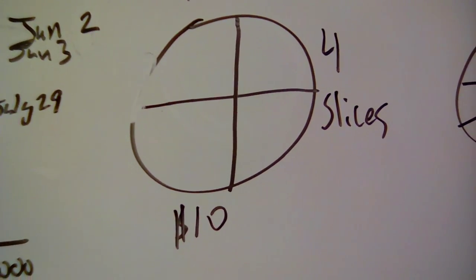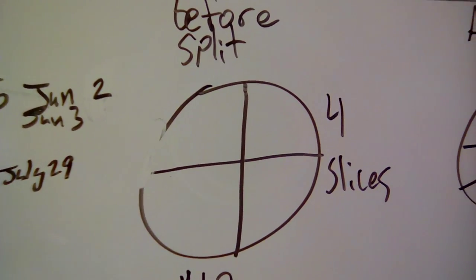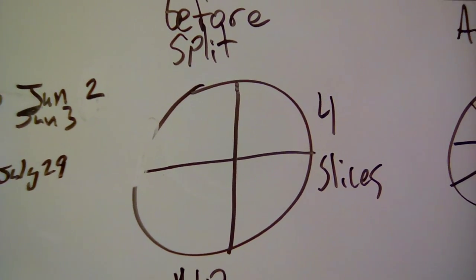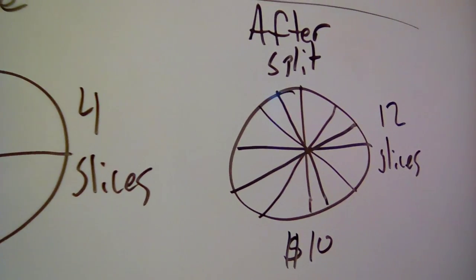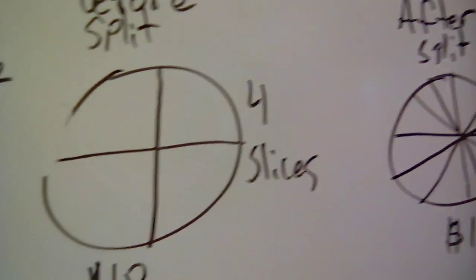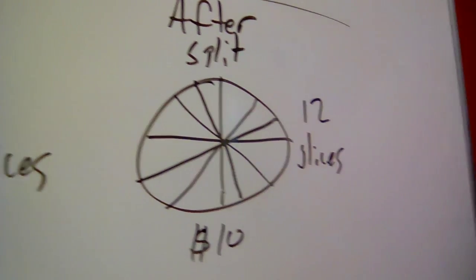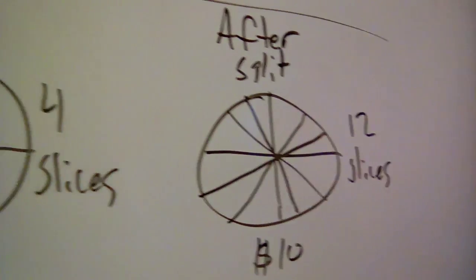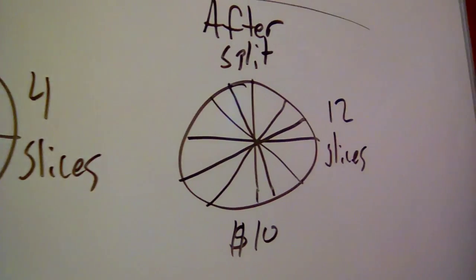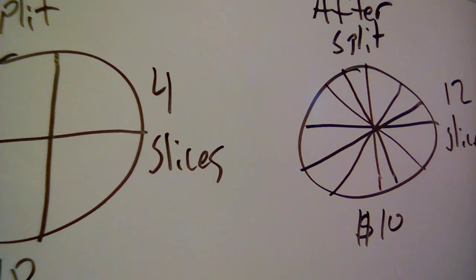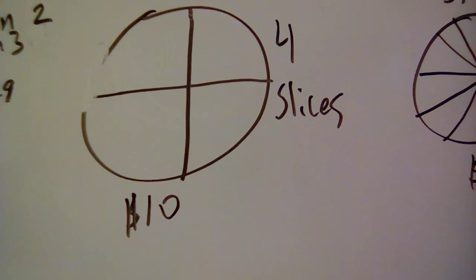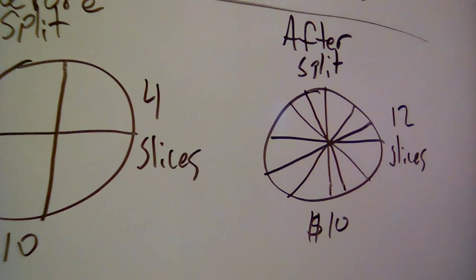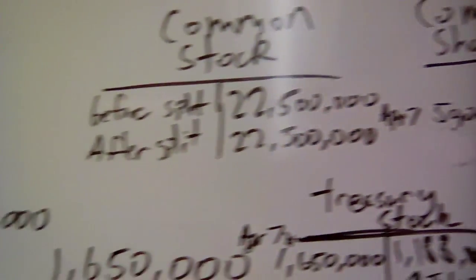Before the split, let's say you have a $10 pizza and you have four slices. And then you say, you know what, we're going to split the pizza like a stock split. After the split, a three for one, so for every one slice you get three slices, you're going to have 12 slices now, but the cost of the pizza is still $10. So that's what basically the whole idea of a stock split is. You get more slices or shares, but the value doesn't change. So the value per share goes down, but all together it's the same overall value.